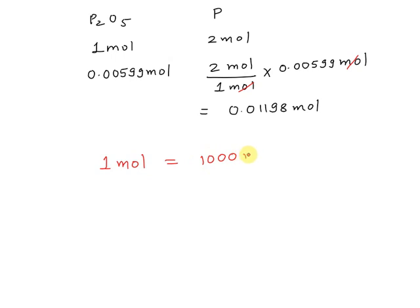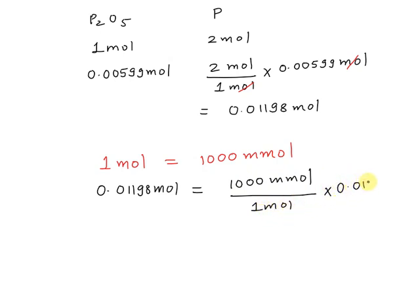Then we can say 0.0198 mole will be equal to 1000 millimoles divided by 1 mole times 0.0198 mole. From here we can eliminate this mole unit. On solving this, we are getting the millimoles of phosphorus atom equals to 11.98 millimoles.